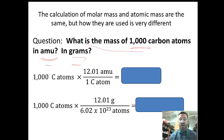We know that one carbon atom has a mass of 12.01 AMUs. If we had 1,000, that's the number we'd start with. We'd multiply 1,000 carbon atoms by 12.01 AMUs over one carbon atom. The carbon atoms cancel.